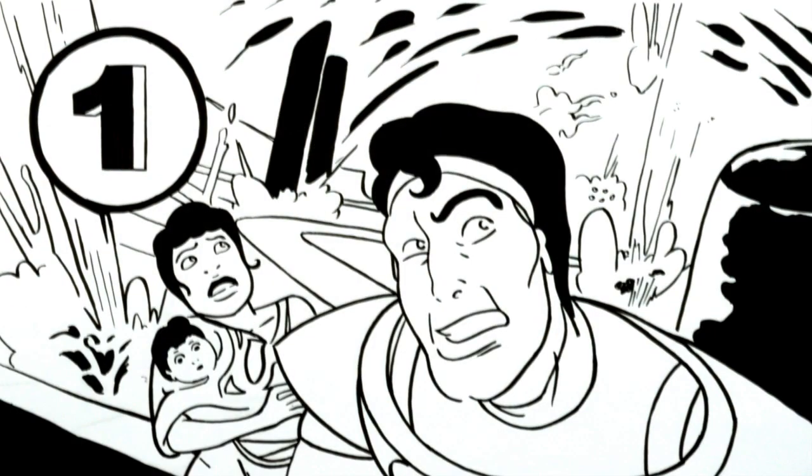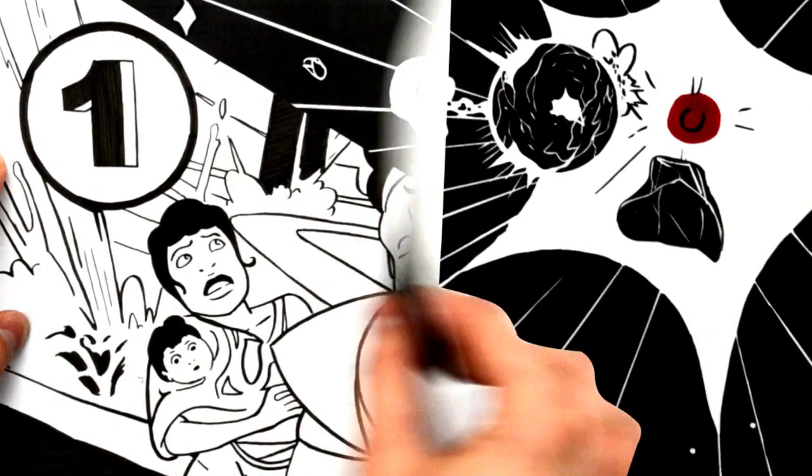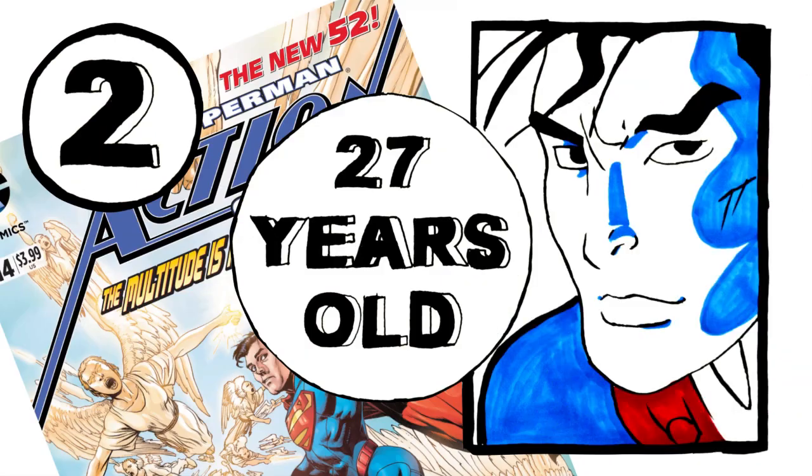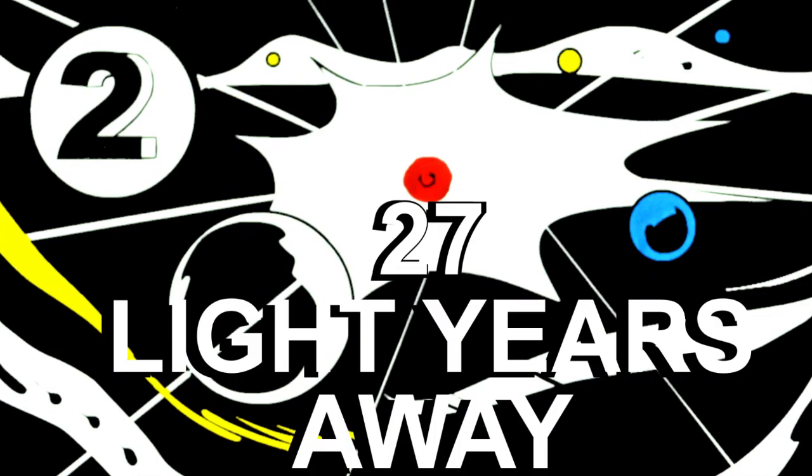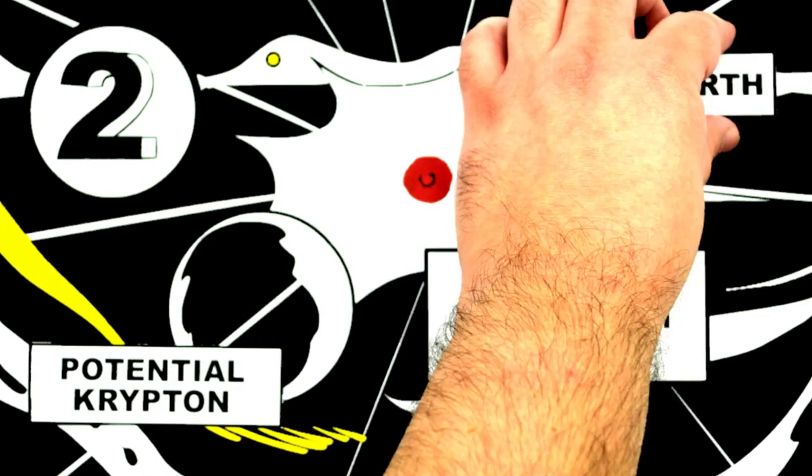First, we all know Superman's world was destroyed because of the planet's unstable core. Second, in the new Action Comics, Superman is 27 years old. This star is 27 light years away. So that narrows the field.